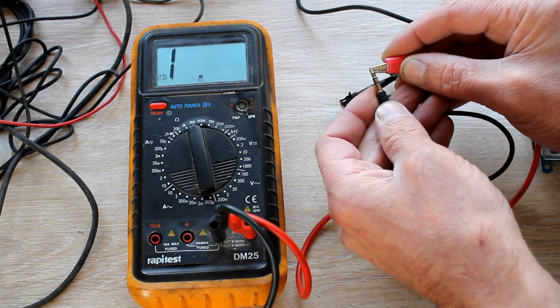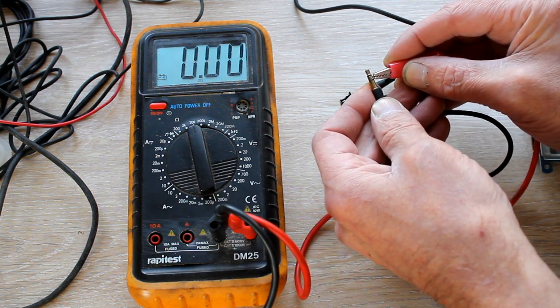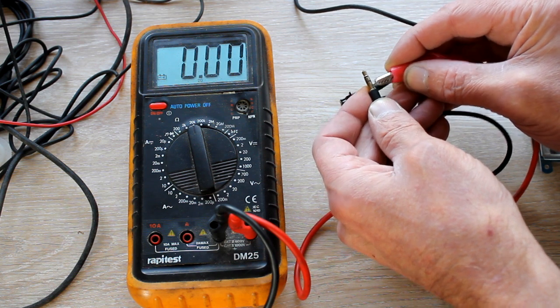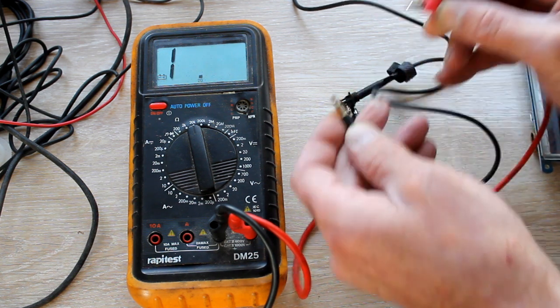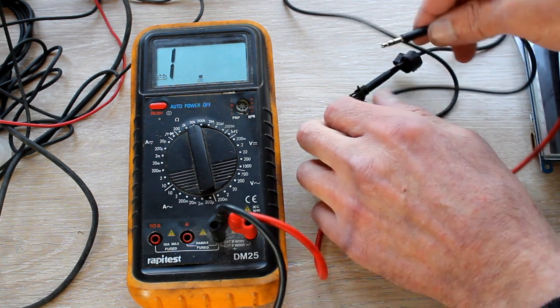There you see, nothing on the positive. But in the middle, on the other positive you're getting a connection. Nothing on the earth, so the earth's doing nothing I think. So that's why you don't get no signal.